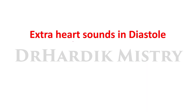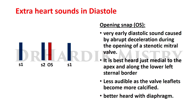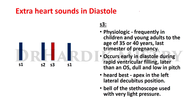Extra heart sounds in diastole include the opening snap, an early diastolic sound caused by abrupt distension during opening of the stenotic mitral valve. It is best heard just medial to the apex and along the lower left sternal border. It becomes less audible as the valve leaflets become more calcified, and is best heard with the diaphragm.